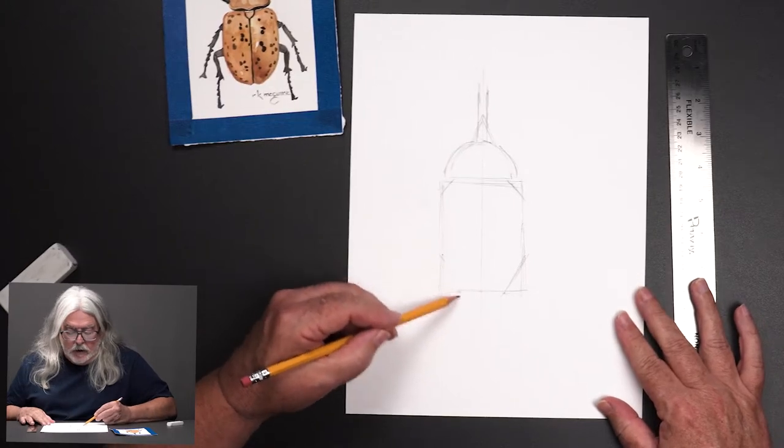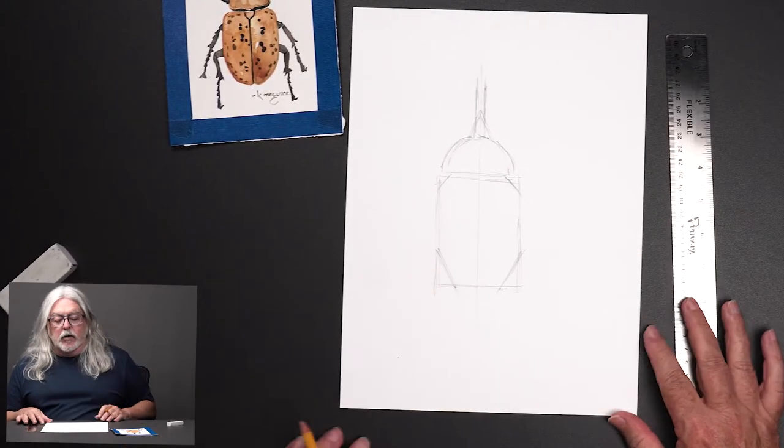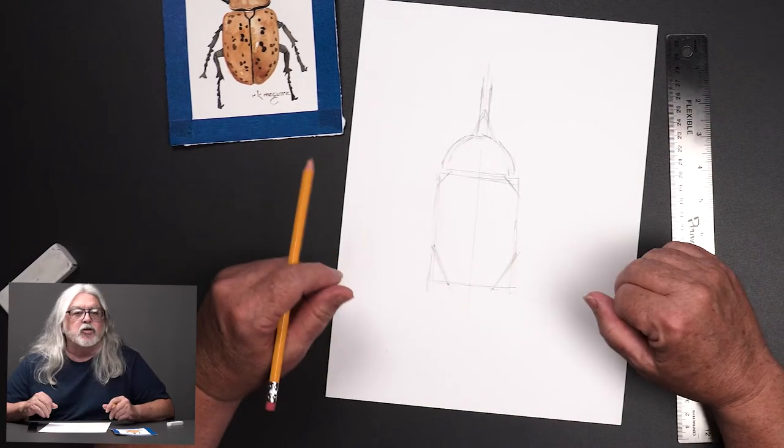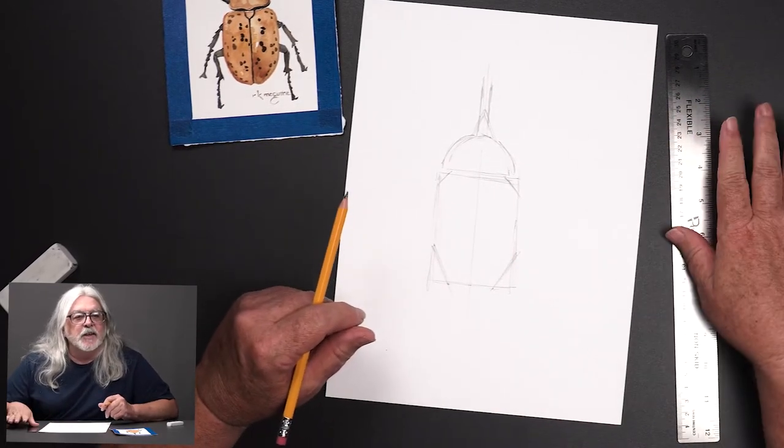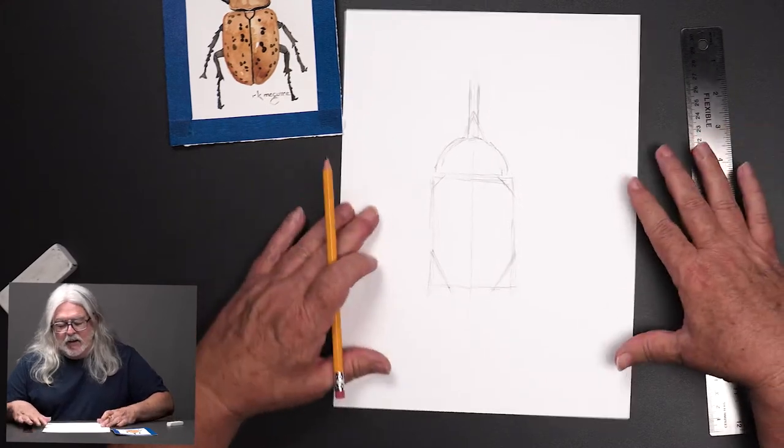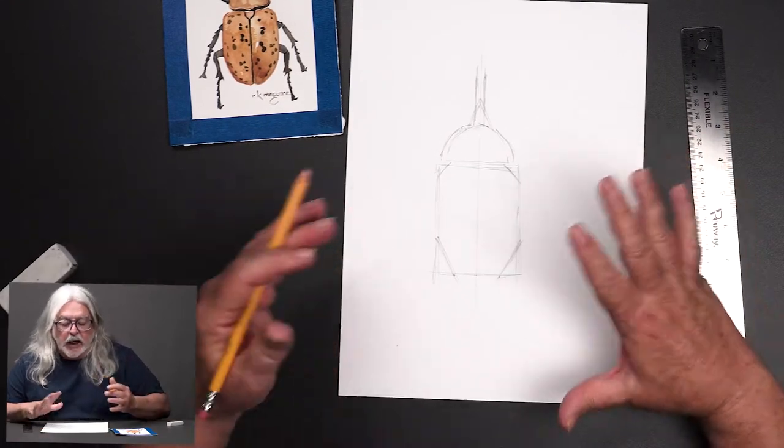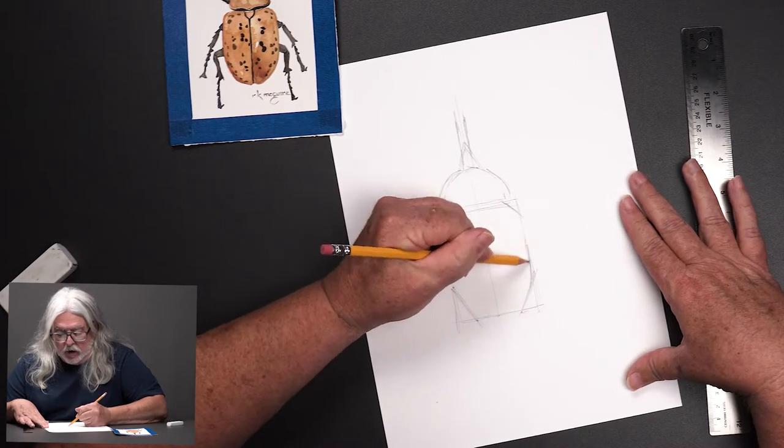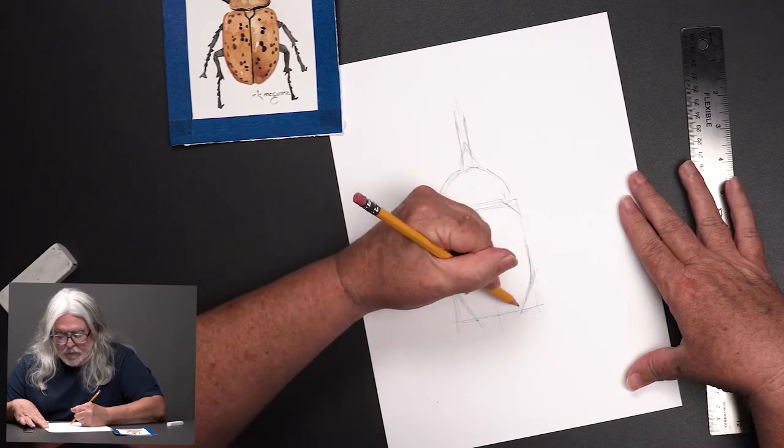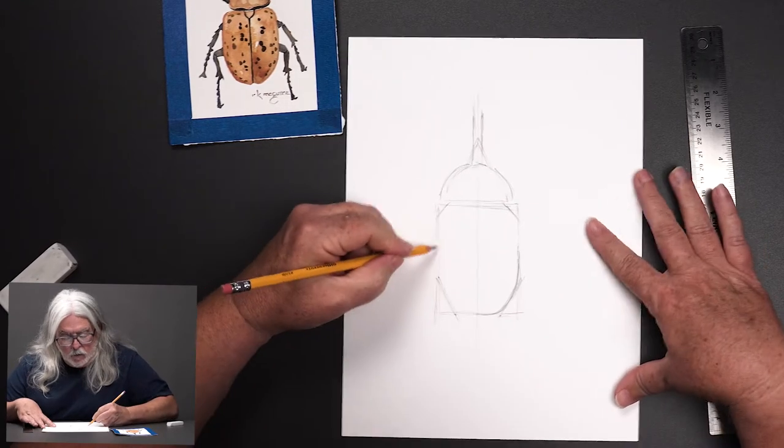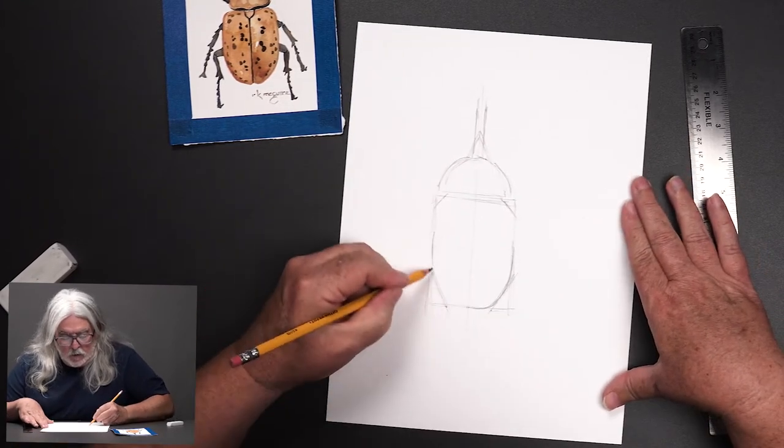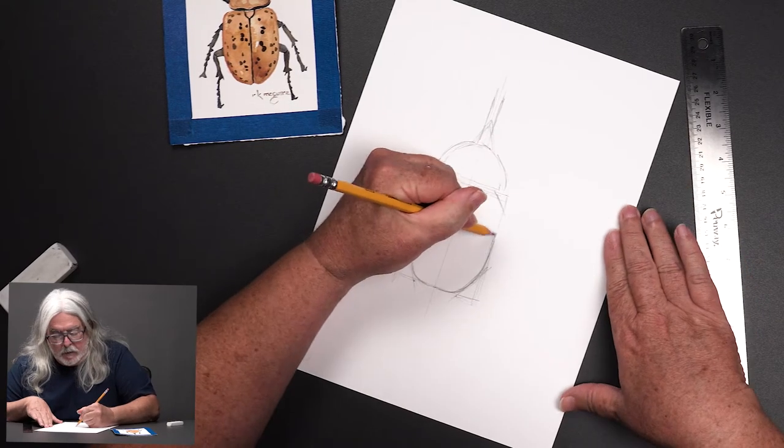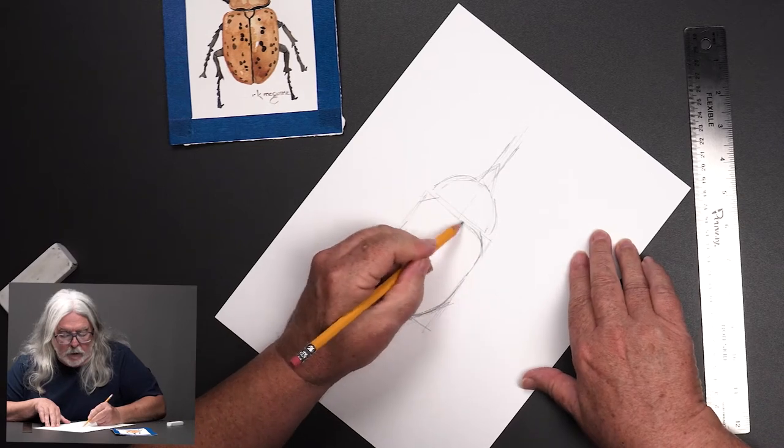So we have this nice little geometric shape that I can now round off to the bug-like size. I just use those guidelines, I can just softly roll that around, same up here we just round off the top a little bit.